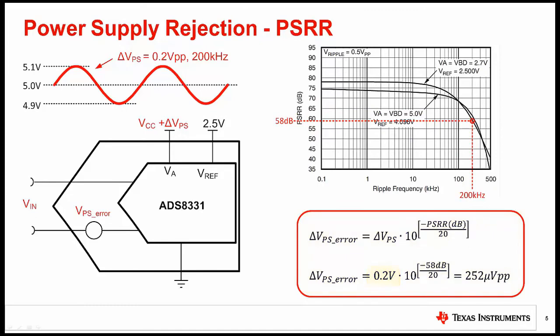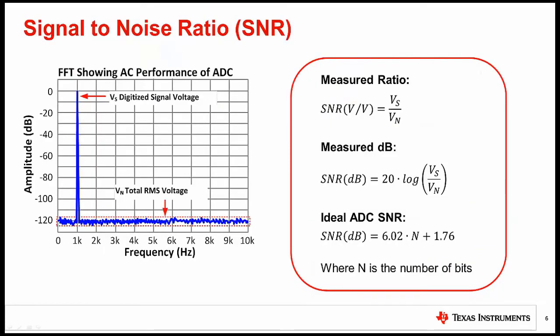Plugging the 200 millivolt peak to peak and 58 dB into the equation yields a noise of 252 microvolts peak to peak. Let's move on to the next specification.